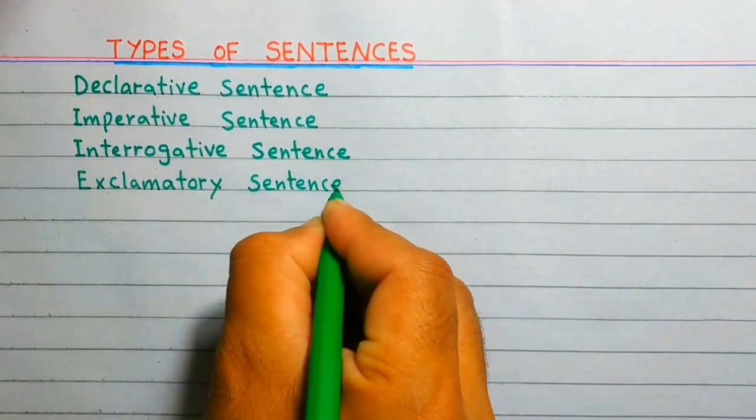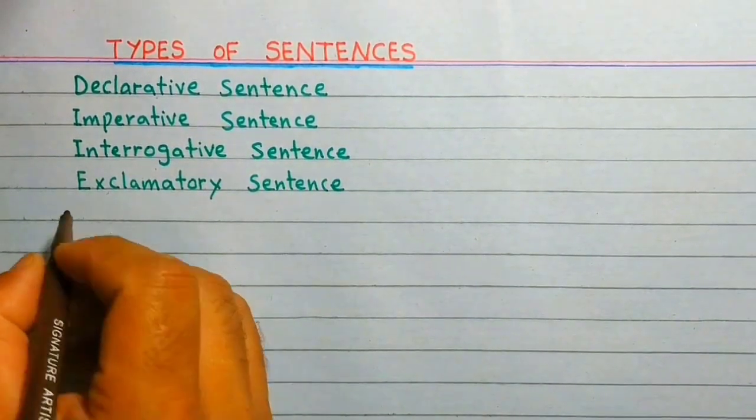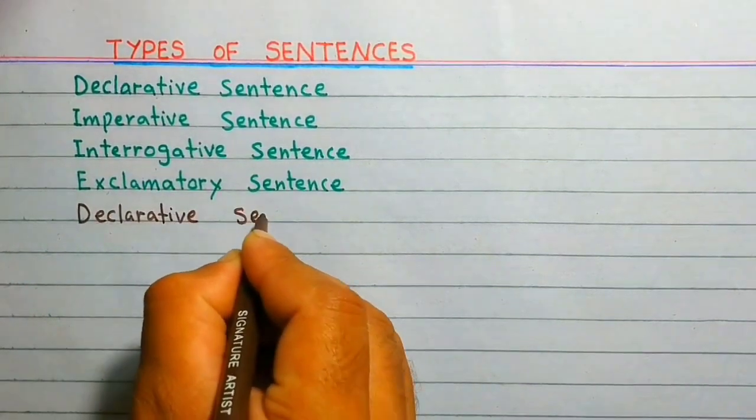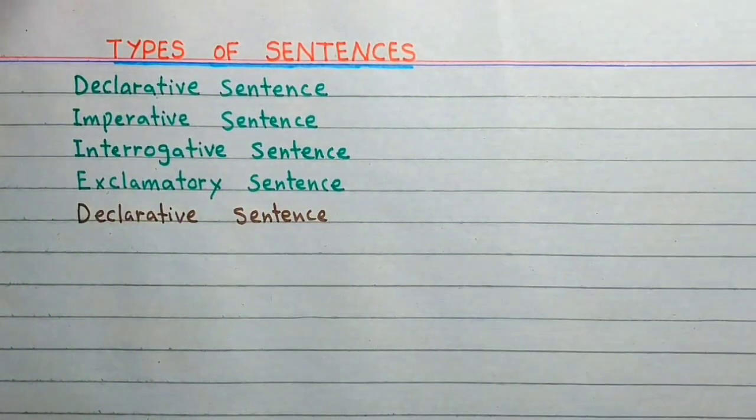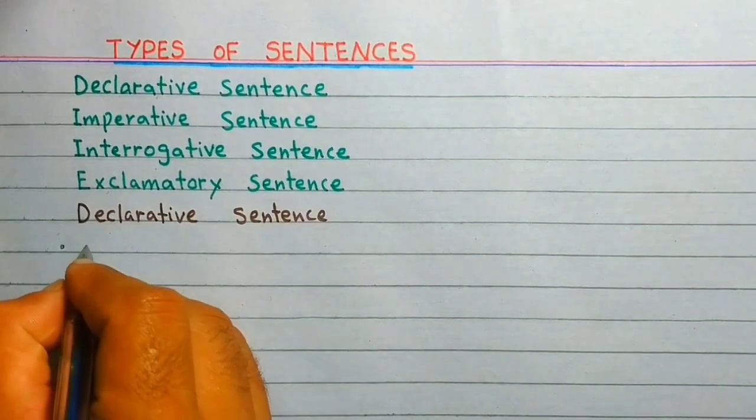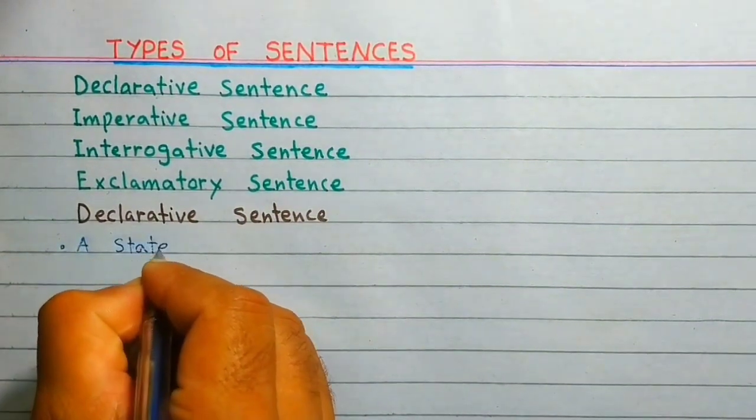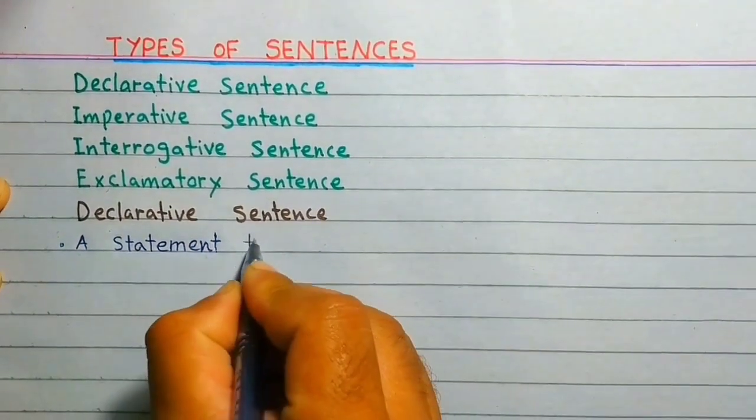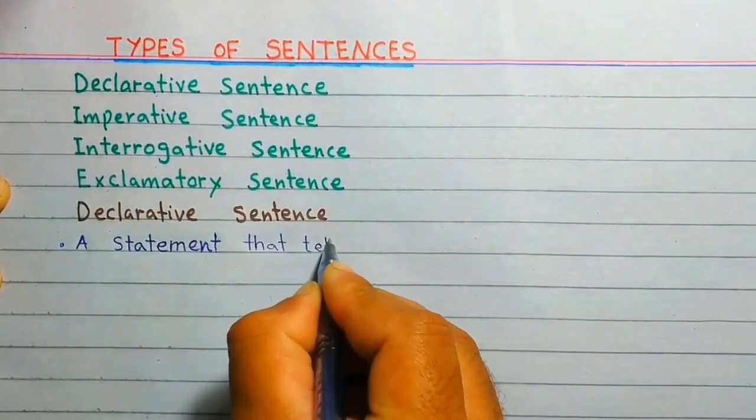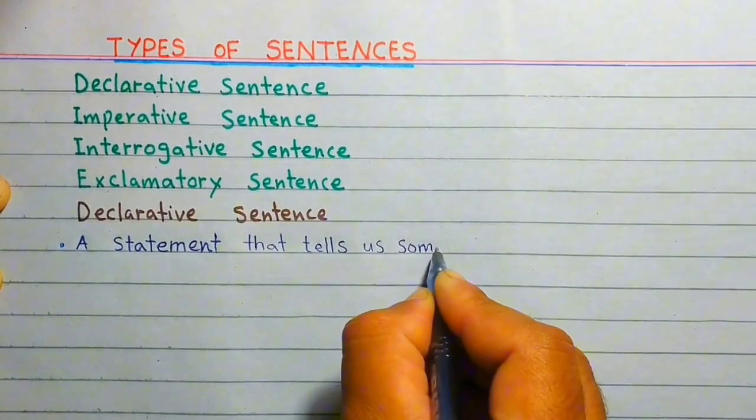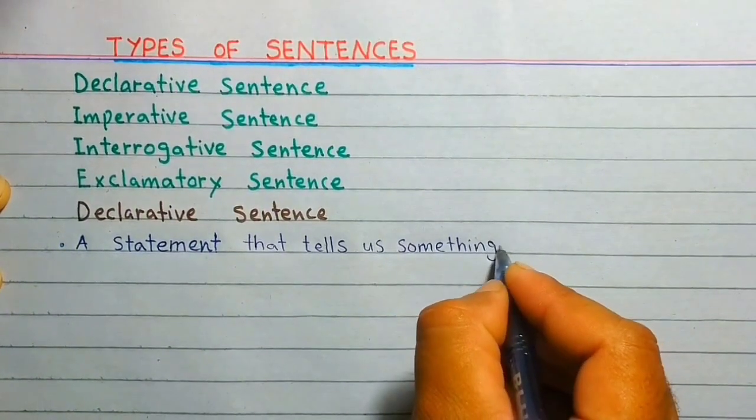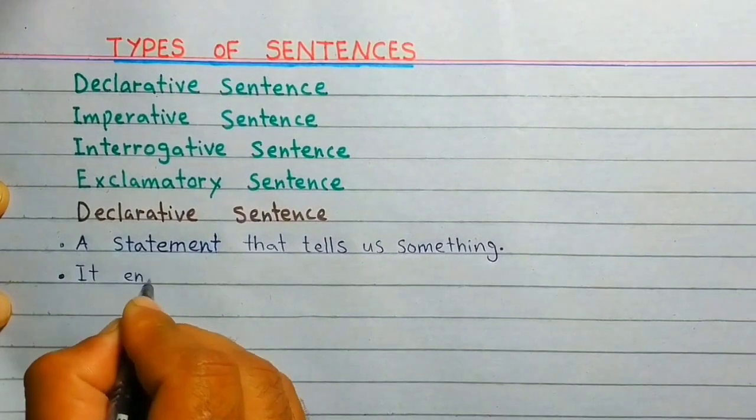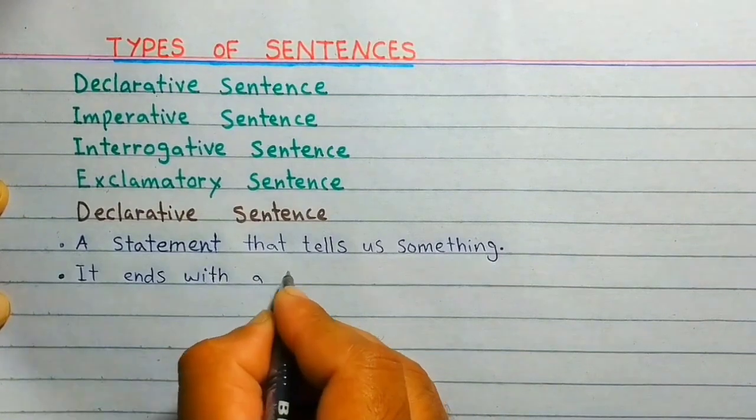Declarative sentence. A statement that tells us something. It ends with a full stop.